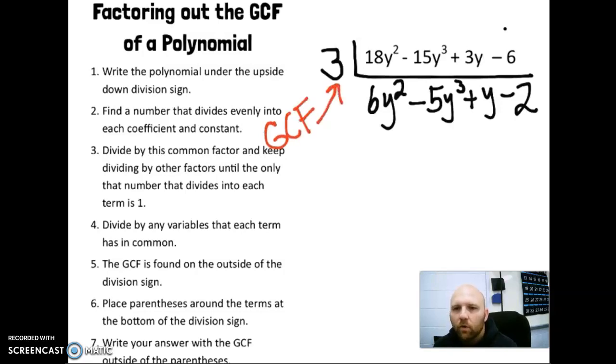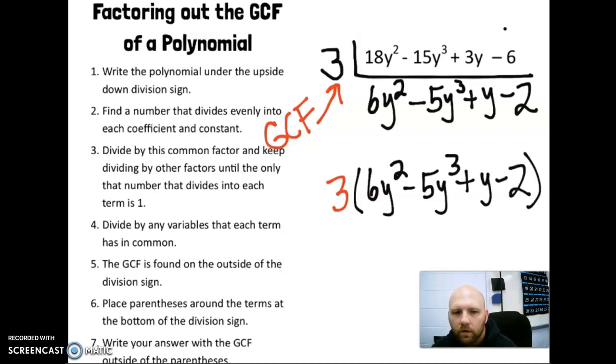And our GCF always goes outside the parentheses. So our final answer, 18y² minus 15y³ plus 3y minus 6 is equal to 3 times (6y² minus 5y³ plus y minus 2).